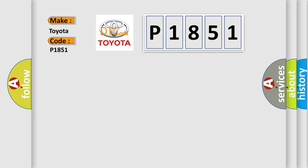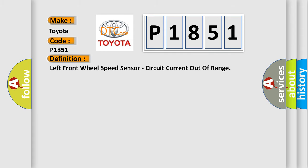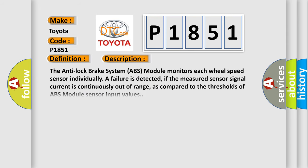The basic definition is: Left front wheel speed sensor, circuit current out of range. The anti-lock brake system (ABS) module monitors each wheel speed sensor individually. A failure is detected if the measured sensor signal current is continuously out of range, as compared to the thresholds of ABS module sensor input values.